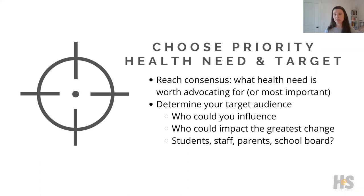Now at this point, as a teacher, you have some decisions to make. Before you proceed with the project, you want to decide if your class is going to have its own advocacy agency — in other words, the class chooses one priority health need for which to advocate. This is a really powerful choice, because you have a lot of hands working on the same project and can have a very impactful result. It also makes managing the project from a teacher's perspective a little bit easier if each class is working on one project, as opposed to every individual student or small group working on separate projects.